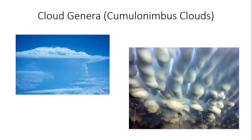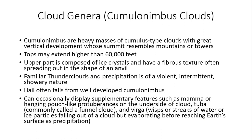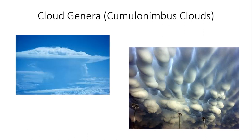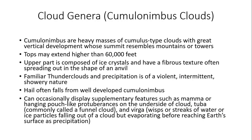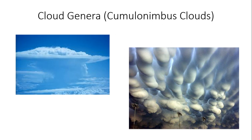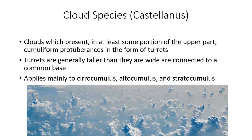Here are great examples: the upper left shows a cumulonimbus cloud — notice the fibrous texture at the top spreading out horizontally in the shape of an anvil. The lower right image is a really cool picture of mamma, or mamatus clouds — these pouch-like protuberances underneath the base of a cumulonimbus cloud. If you see mamatus clouds, you know right away that you're looking at a cumulonimbus cloud. There have been some really neat pictures on social media showing many forms of mamatus clouds — they look like egg crates or the udders of a cow.